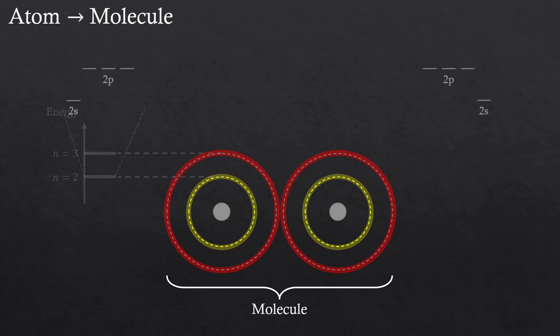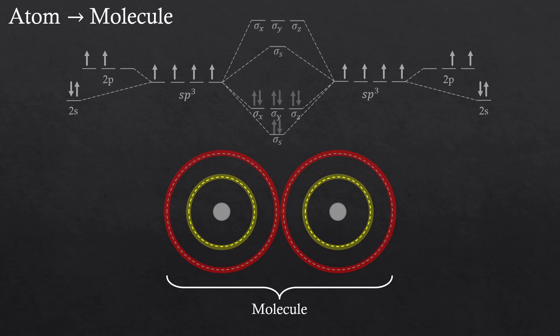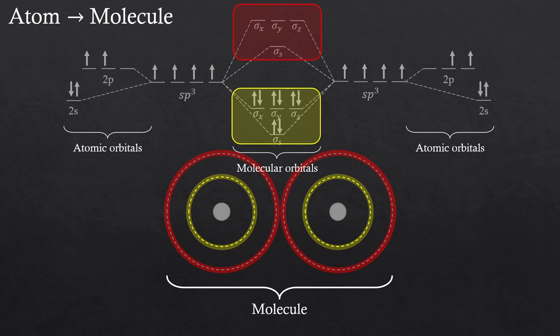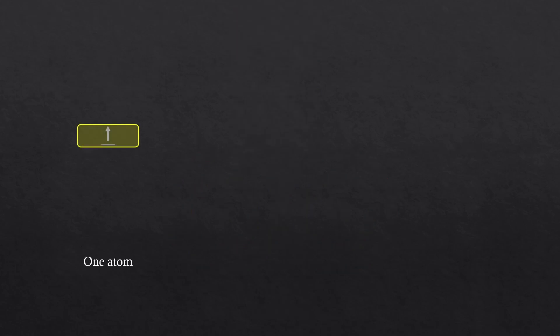You remember these energy level diagrams from high school chemistry? When we have two atoms trying to bond together, they undergo hybridization like this. After hybridization, the electrons stay here on the bottom to form bonds. And this is called molecular orbitals. And we get this new shell on top that looks just like a conduction shell, because it's an empty shell. So one atom will just have a valence shell. And when two atoms forms a bond, we suddenly have a conduction shell.